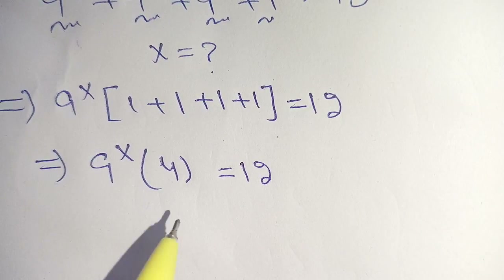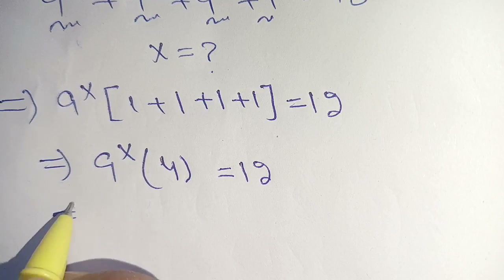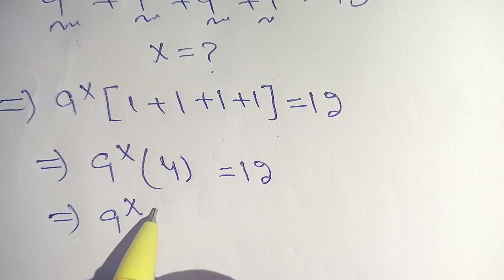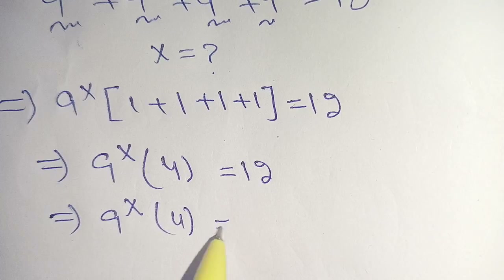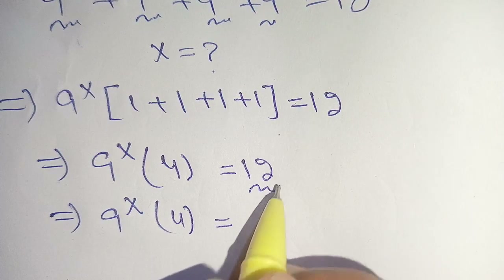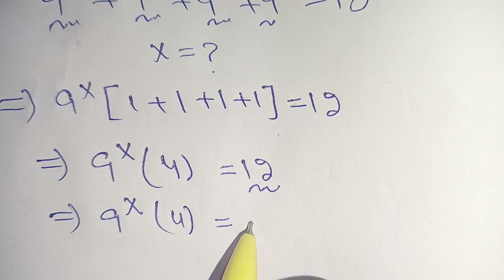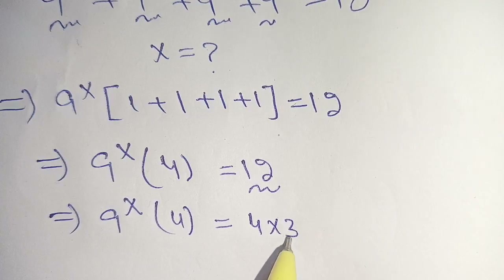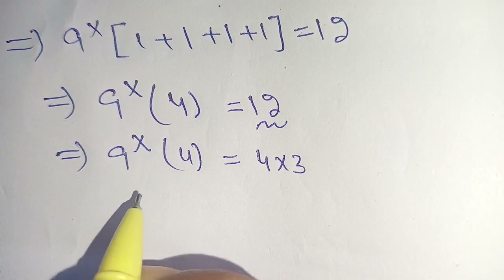In the next step, we can write this as 9 raised to the power x times 4 is equal to 12. We can break down 12 in terms of 4, and it is equal to 4 times 3.